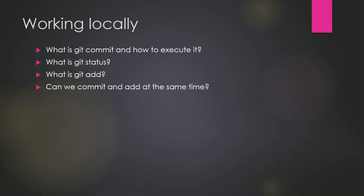Hey guys, welcome back to another video in the series of git crash course. Today we are going to talk about how to work in git locally. There are four points: first, what is git commit and how to execute it; second, what is git status; third, what is git add; and fourth, can we commit and add at the same time.